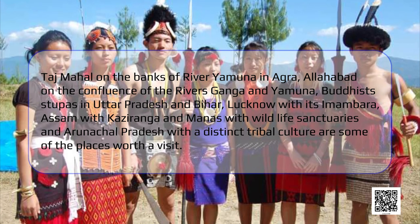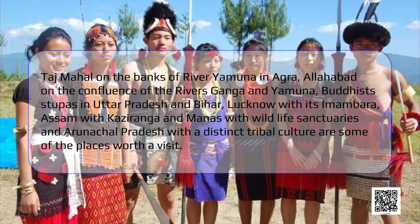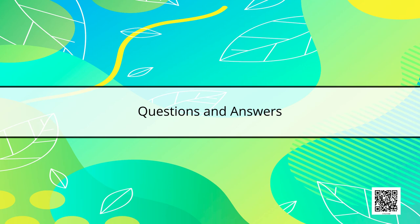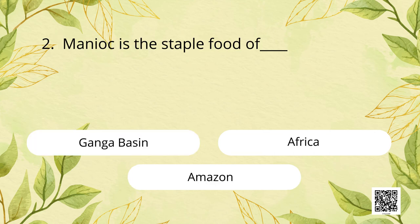With this we come to the end of today's lesson. It's time to take up a few questions to see how much you have understood. First, some questions with options. Question 1: Toucans are a type of? Options: Birds, animals, or crops? The correct answer is: Birds. Question 2: Manioc is the staple food of? Options: Ganga Basin, Africa, or Amazon? The correct answer is: Amazon.